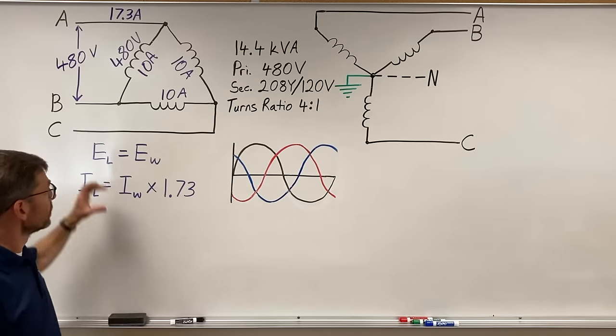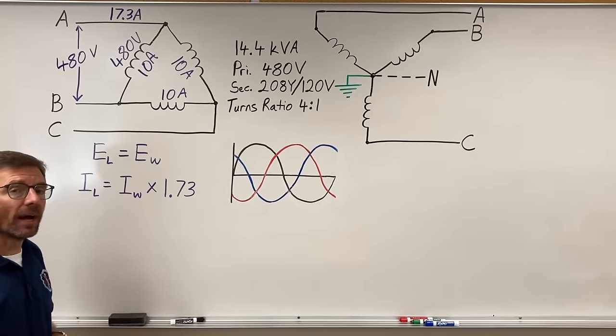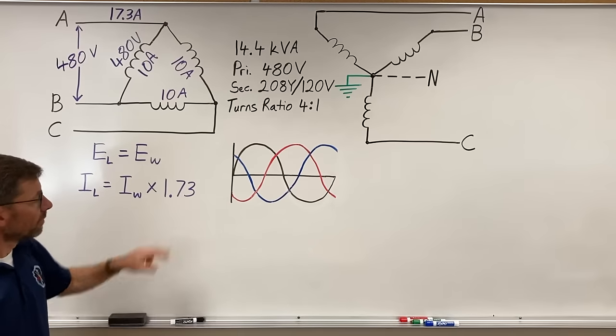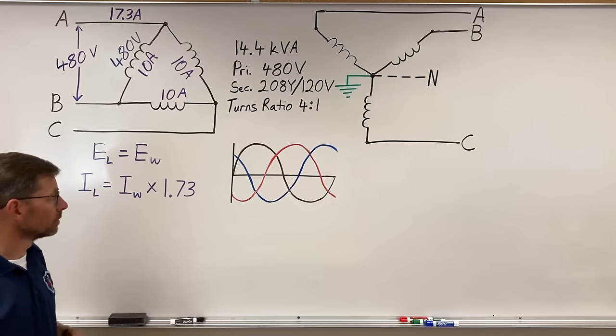So in delta, voltages are the same. The line current is different from the winding current. Factor of root 3, square root 3, 1.73.